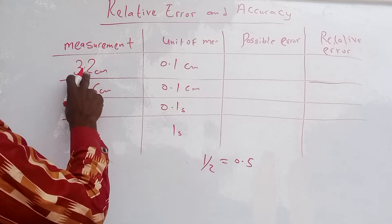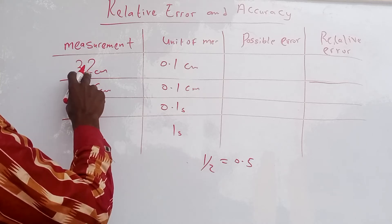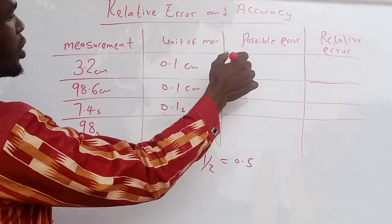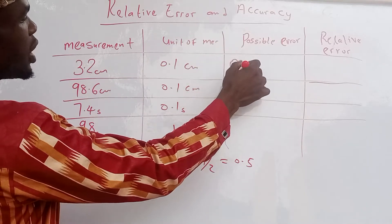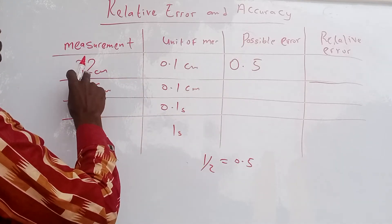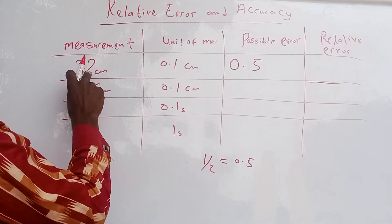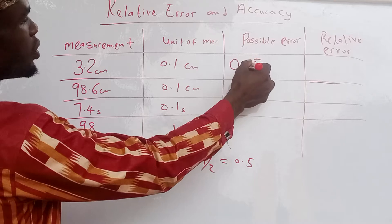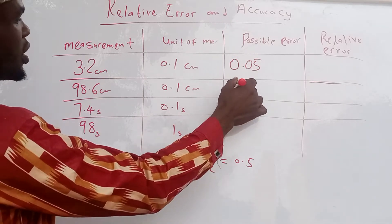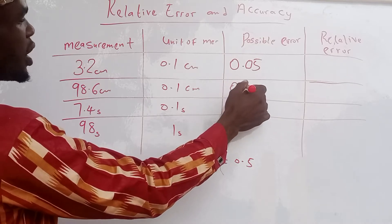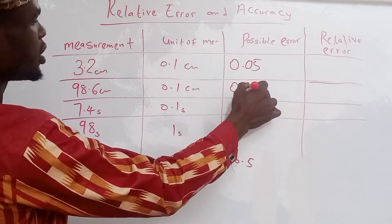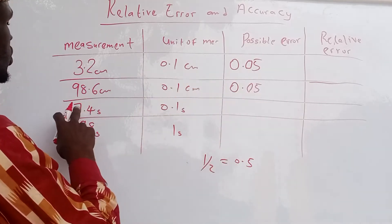You will use the value of how many numbers after the decimal point. We have one number here, so this is our normal error 0.5. If we have one decimal place, we add one zero, making it 0.05. For the second one, the normal error is 0.5, and with one number after the decimal point, the possible error is 0.05.